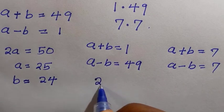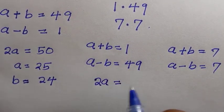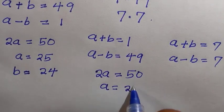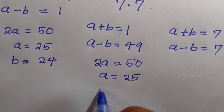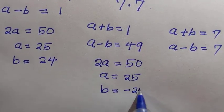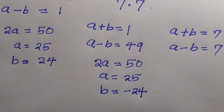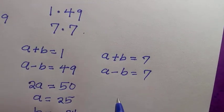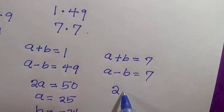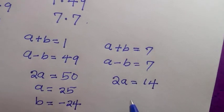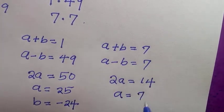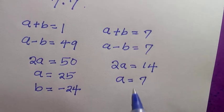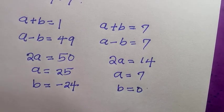For the second case — where a plus b equals 1 and a minus b equals 49 — this is the case where a plus b is less than a minus b, which is invalid. For the third case with 7 times 7: 2a equals 14, so a equals 7. Since a equals 7, substituting back gives b equals zero.